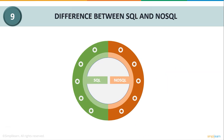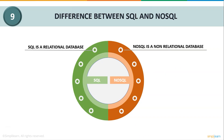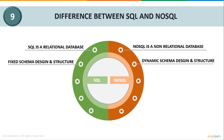Let us now understand some differences between SQL and NoSQL. SQL is a relational database — data is stored in tables with rows and columns under a fixed logical schema, and it is well-suited for complex queries. NoSQL is a non-relational database — it does not store data in tables; instead it uses collections containing documents with key-value pairs. SQL has a fixed schema design while NoSQL has a dynamic schema design.